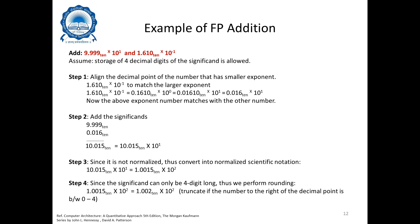Since the digit is greater than four, we add plus one, so 1.0015 becomes 1.002 × 10². That is the number we have after rounding. We then check if further normalization is needed — in this case it is not, since 1.002 × 10² is already normalized. That is the final output of this floating-point addition.